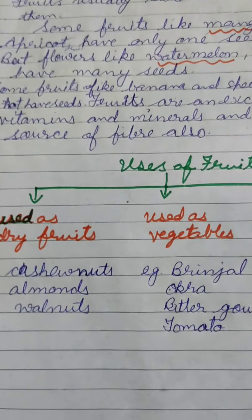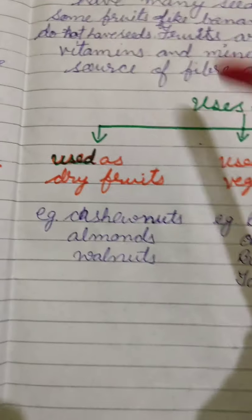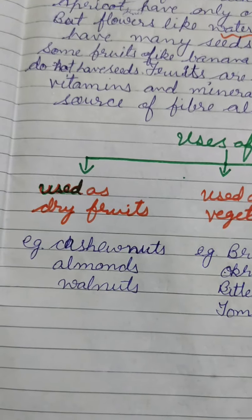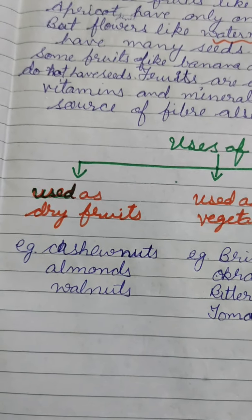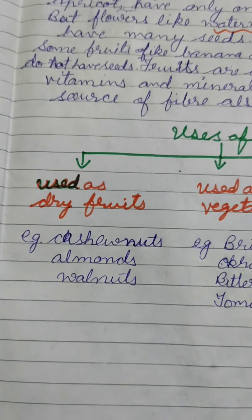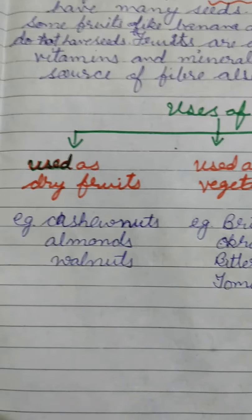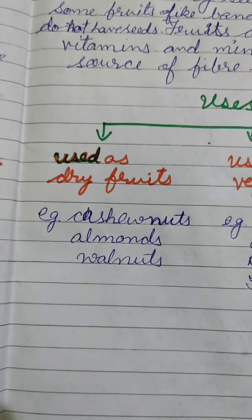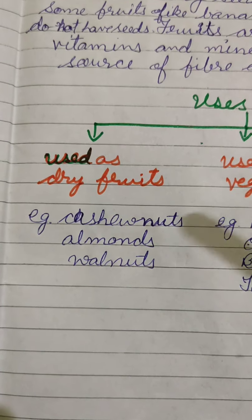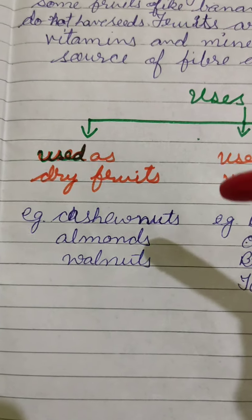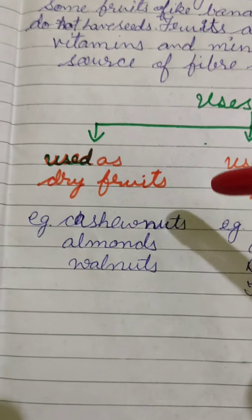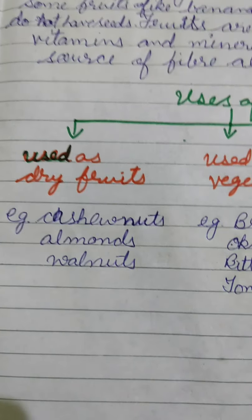Now let us discuss the uses of fruits. First, fruits are used as dry fruits. You have eaten dry fruits in winter because they give us energy and keep our body warm. Fruits like cashew nut, almond, and walnut are first dried and then used. These dry fruits are often eaten as such or used for preparing many dishes like kheer, halwa, or other desserts.